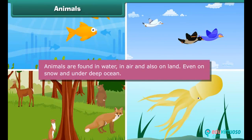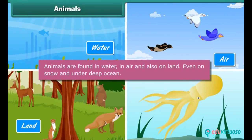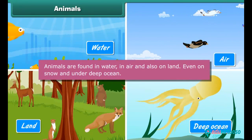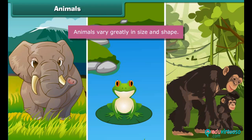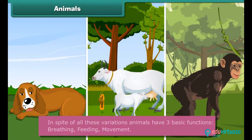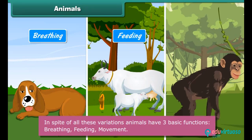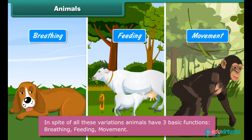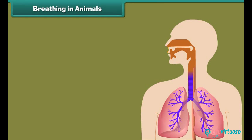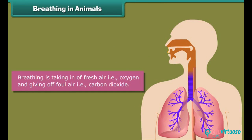Animals are found in water, in air, and also on land — even on snow and under the deep ocean. Animals vary greatly in size and shape, and also in their body structure and habits. In spite of all these variations, animals have three basic functions: breathing, feeding, and movement. Breathing is taking in fresh air — that is oxygen — and giving off foul air — that is carbon dioxide.